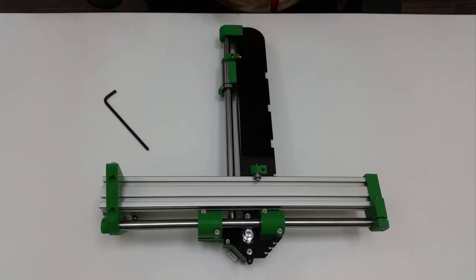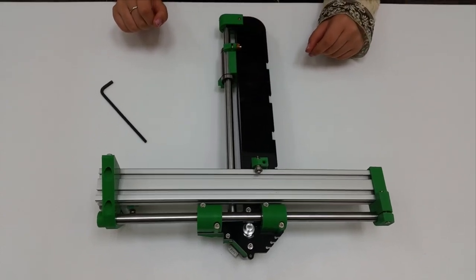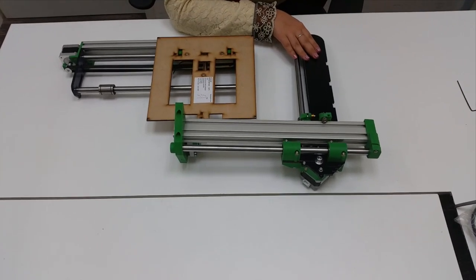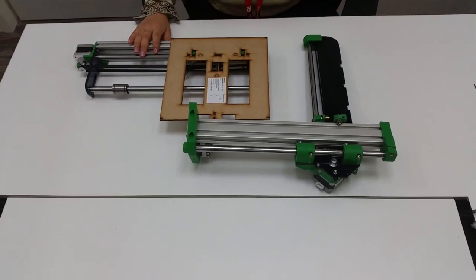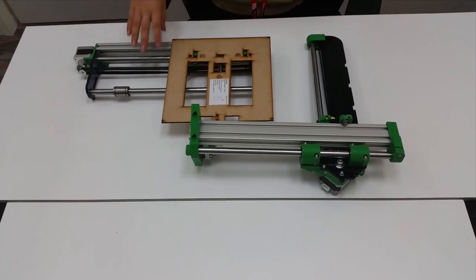This is your fully assembled x-axis with your z-axis. This is the assembled x-axis and this is the finished y-axis. Now I'm going to assemble these two parts together.